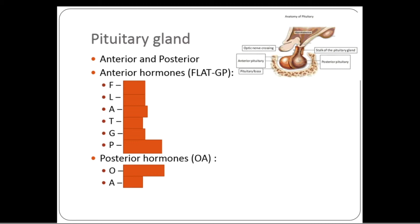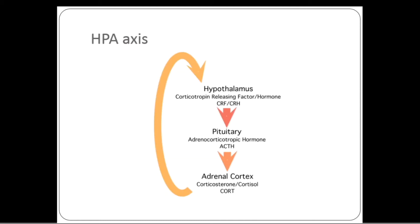The hypothalamus produces five stimulating hormones and two inhibitory hormones to the pituitary. The pituitary gland has two lobes: the anterior and the posterior. The anterior has several hormones, and the posterior stores two hormones from the hypothalamus — oxytocin and the antidiuretic hormone.